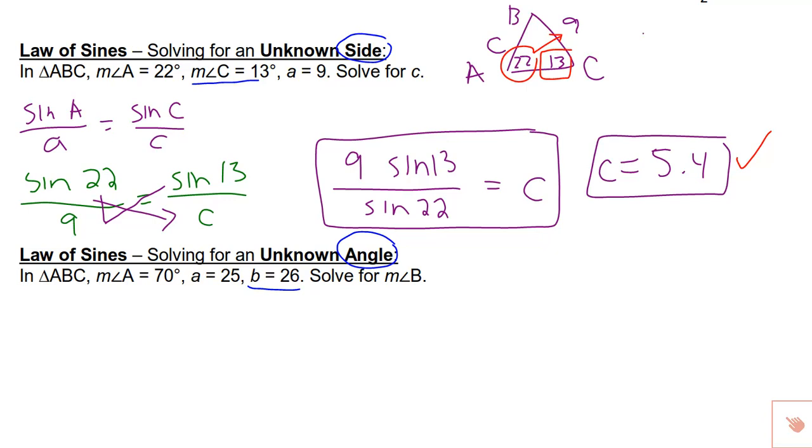And the next example involving law of sines. I am not given the triangle so I'm going to start by drawing it out and filling in what I'm given. Measure of angle A is 70. Side a which is across from that is 25. Side b across from angle B is 26 and I'm asked for the measure of angle B.